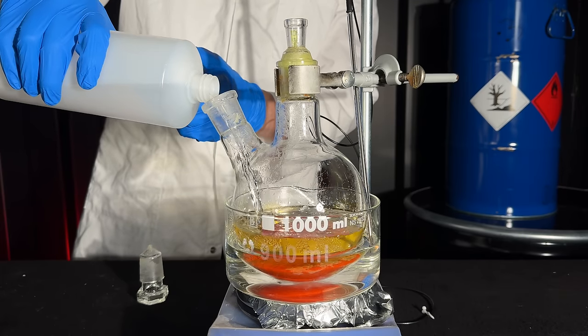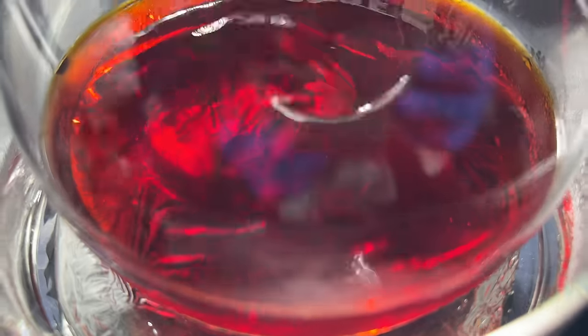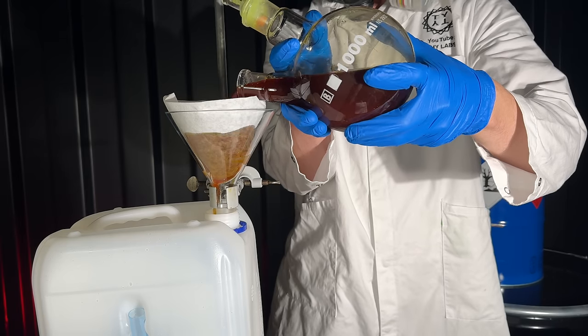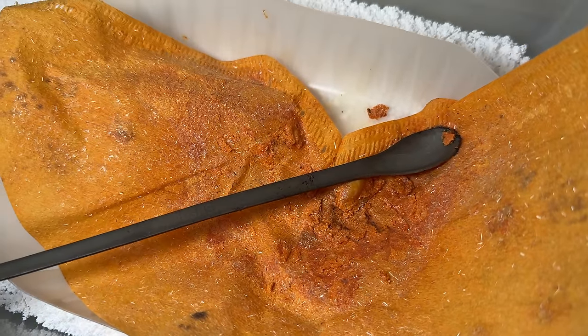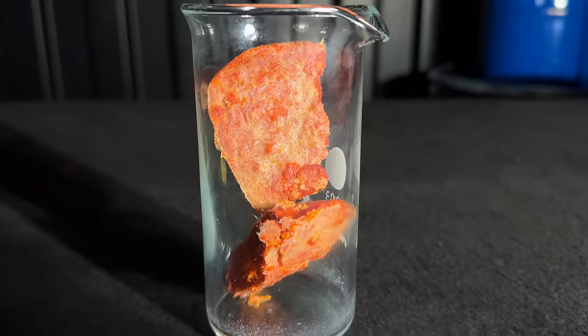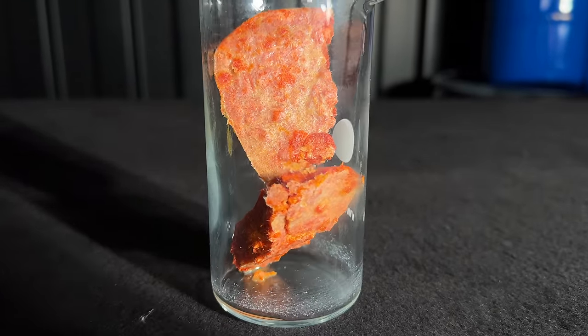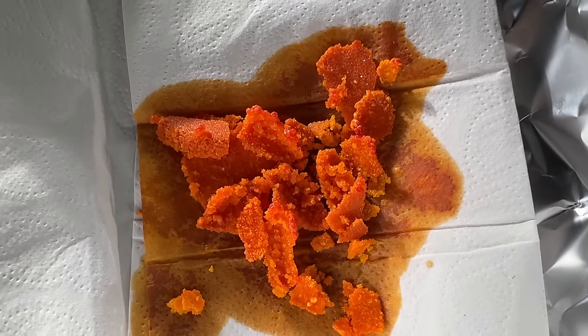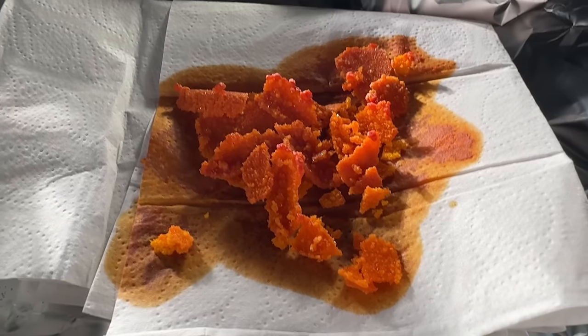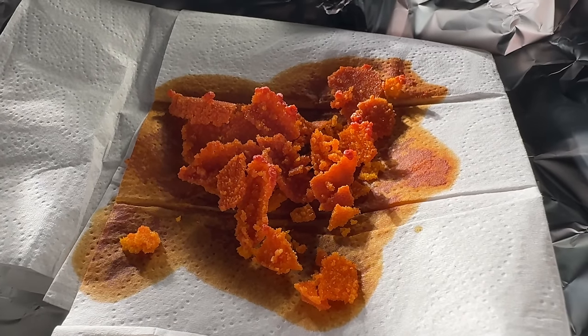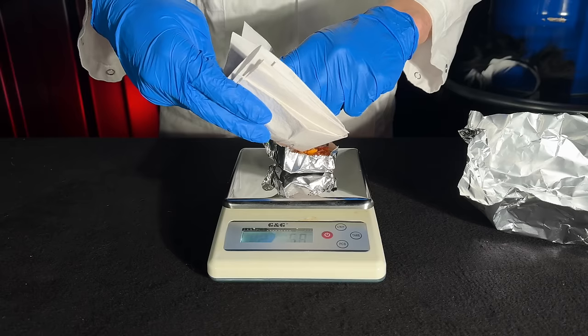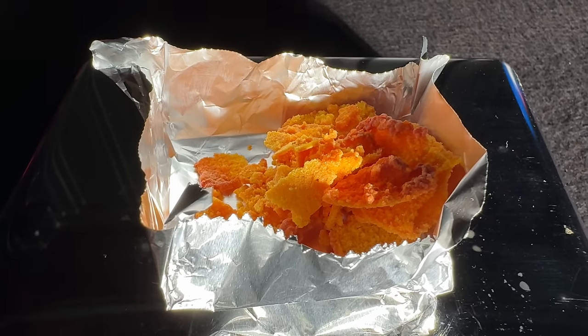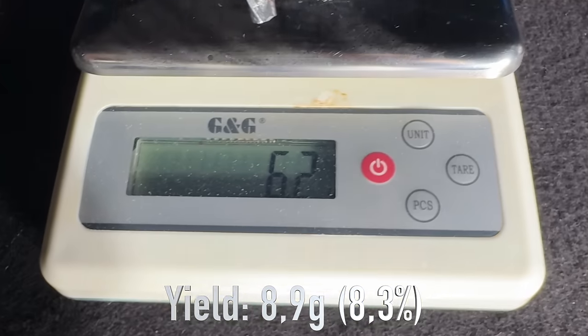From this recrystallization I got 2g of not so clean looking product. I combined the waste with water to crash out the rest of the product and got 40g of this trichlorophenol. This was recrystallized from acetone and I ended up with 6.2g of clean looking product. In total I got 8.9g of product and this represents a yield of 8.3%.